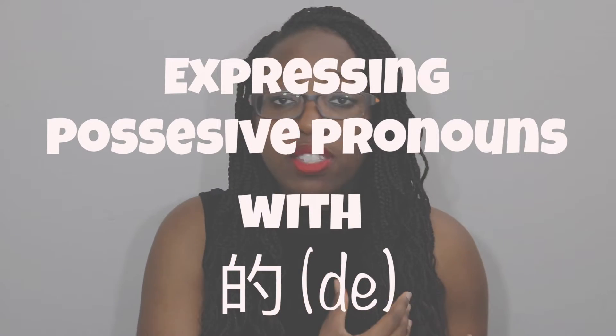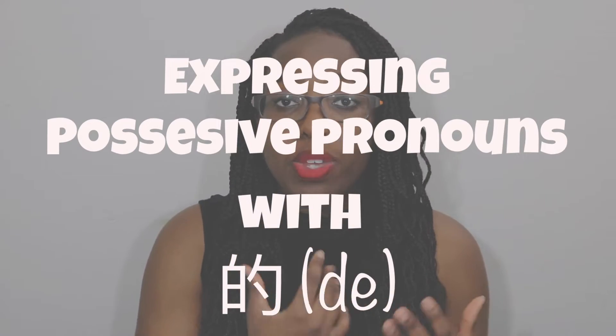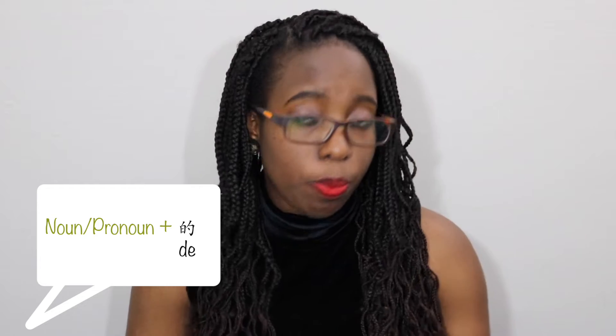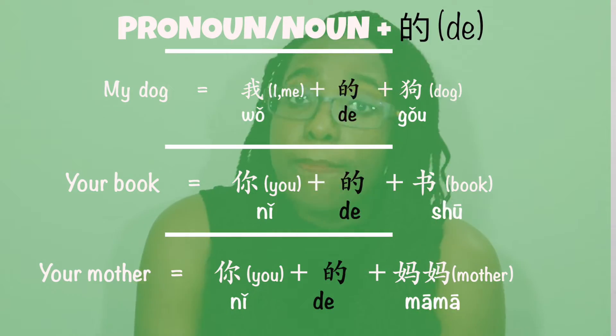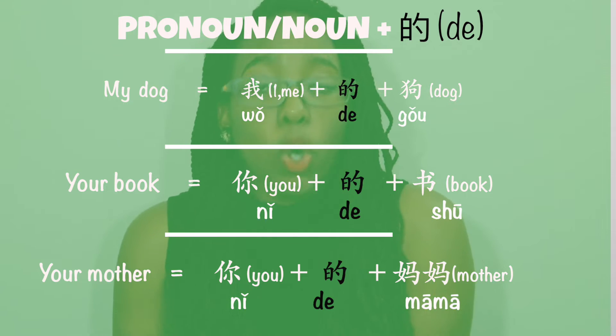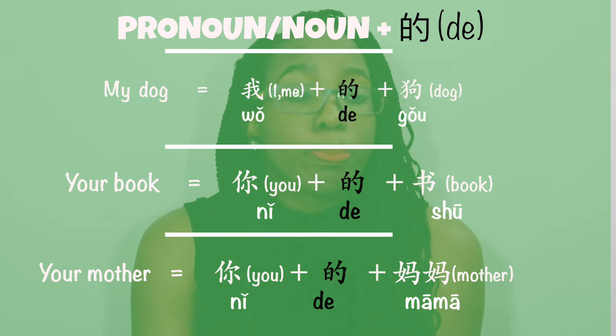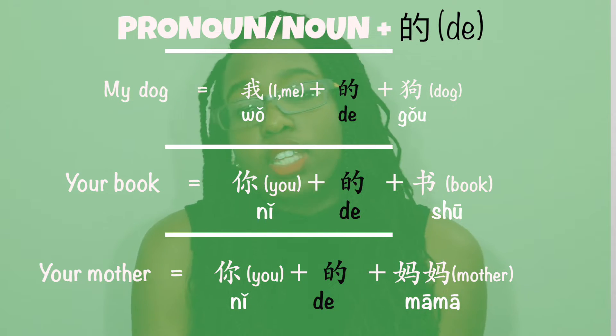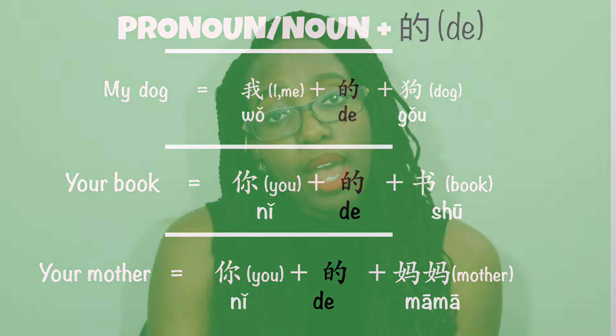First, let's look at expressing possessive pronouns with 的. The structure is noun or pronoun plus 的. For example, if I want to say 'my dog' — 我的狗. 'Your book' — 你的书. 'Your mother' — 你的妈妈.